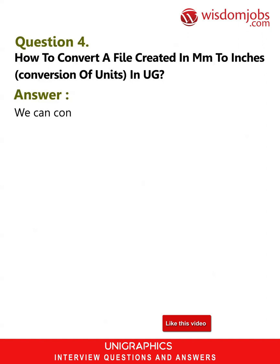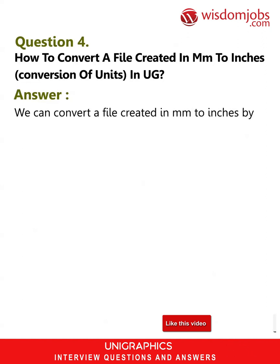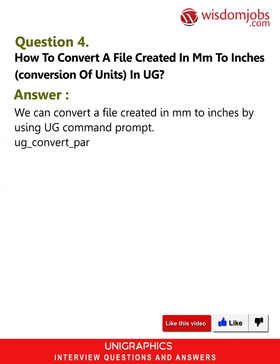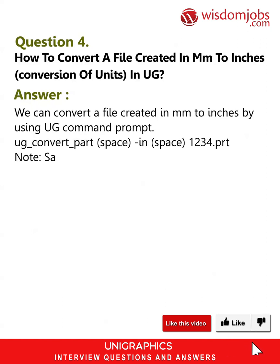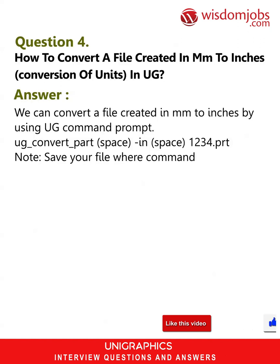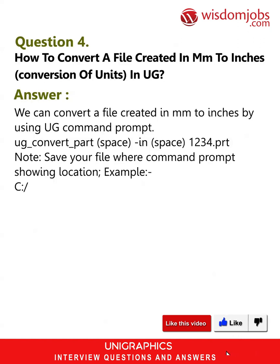Question 4: How to convert a file created in inches — conversion of units in UG? Answer: We can convert a file created in inches by using the UG command prompt: ug_convert_part <space> in <space> 1234.prt. Note: Save your file where the command prompt is showing the location, for example: C:\user\username.